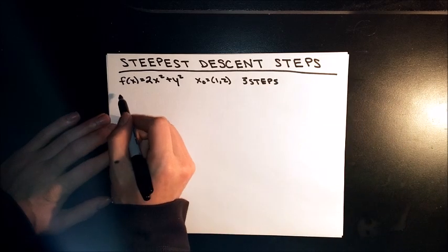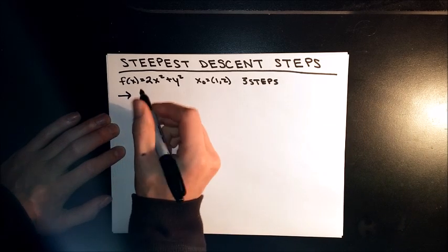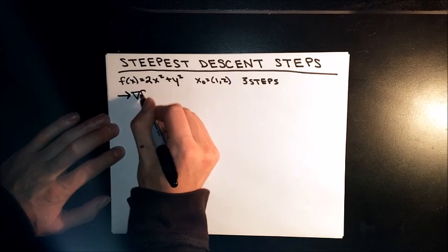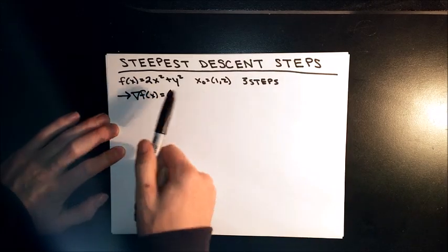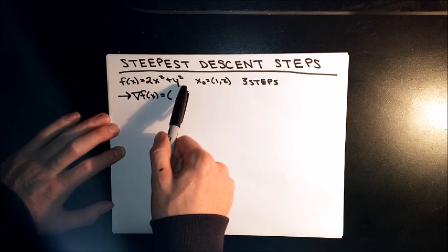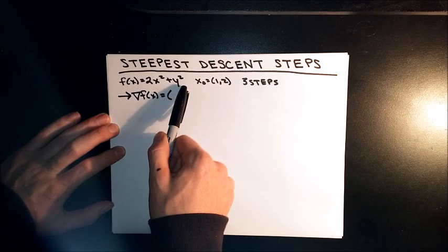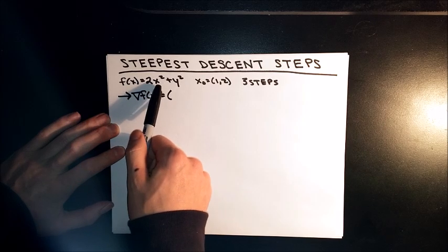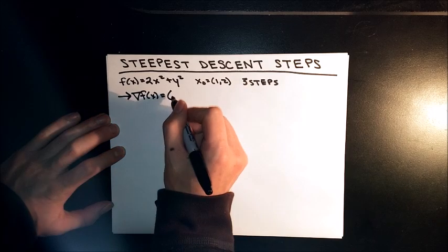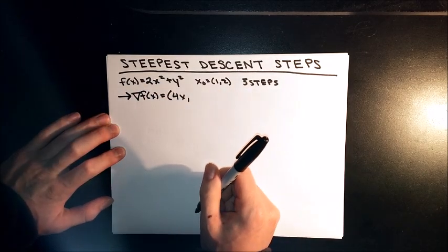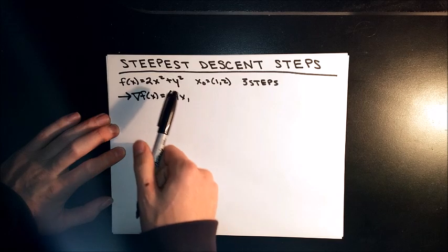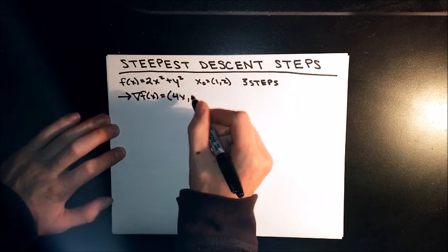Our first step is to find the gradient f of x. We're going to take the derivative of the original equation with respect to x, which will be 4x, and this goes to 0. And then same thing with respect to y, which will be 2y.